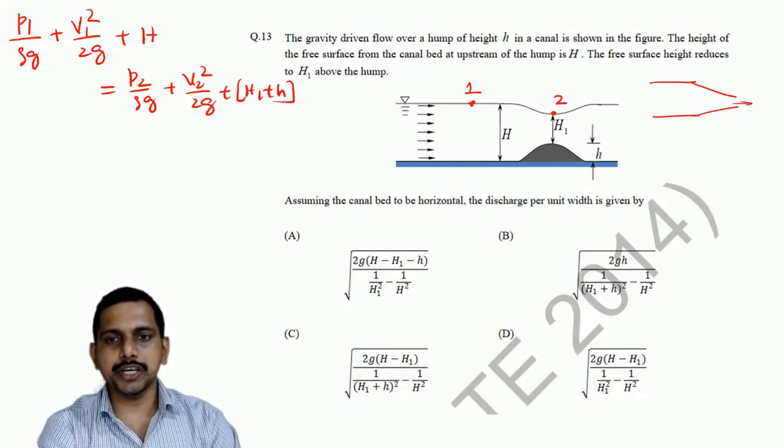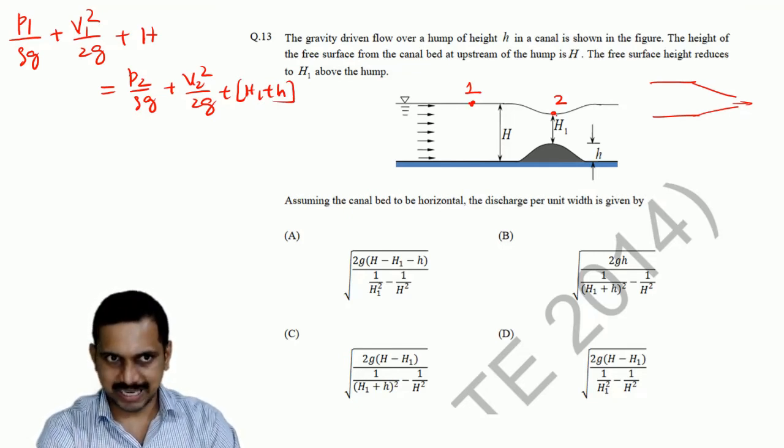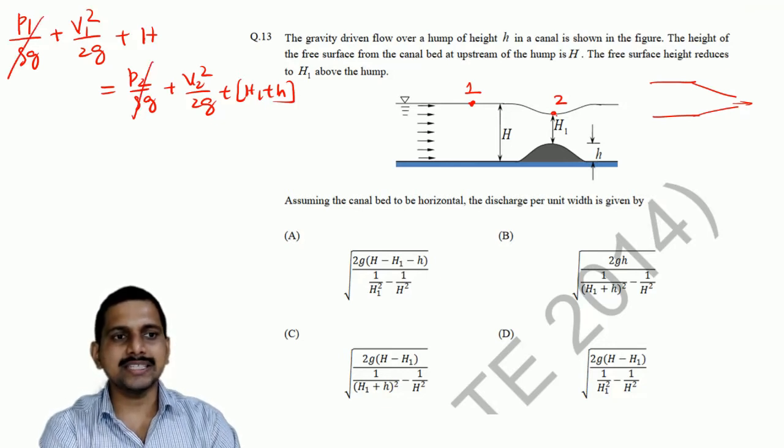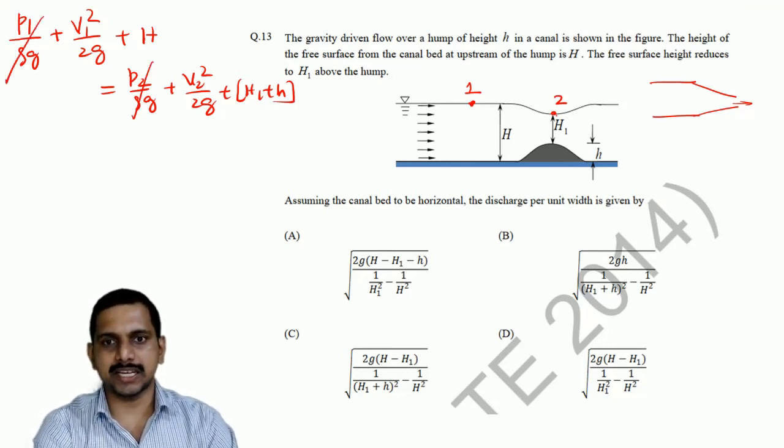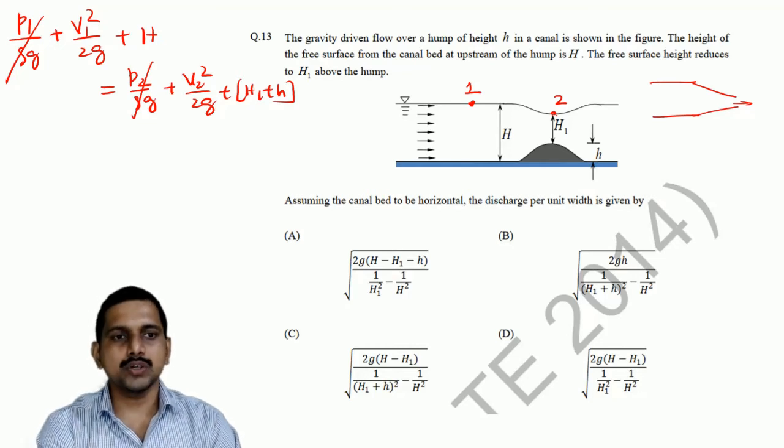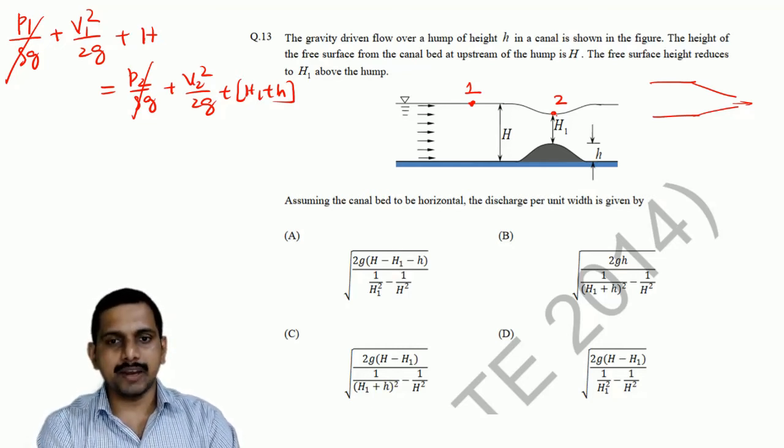Now, since the pressure at 1 and 2 is the same, so we can get this cancelled, because it is atmospheric pressure which is acting. It is a free stream. So here, another point we have to take is,